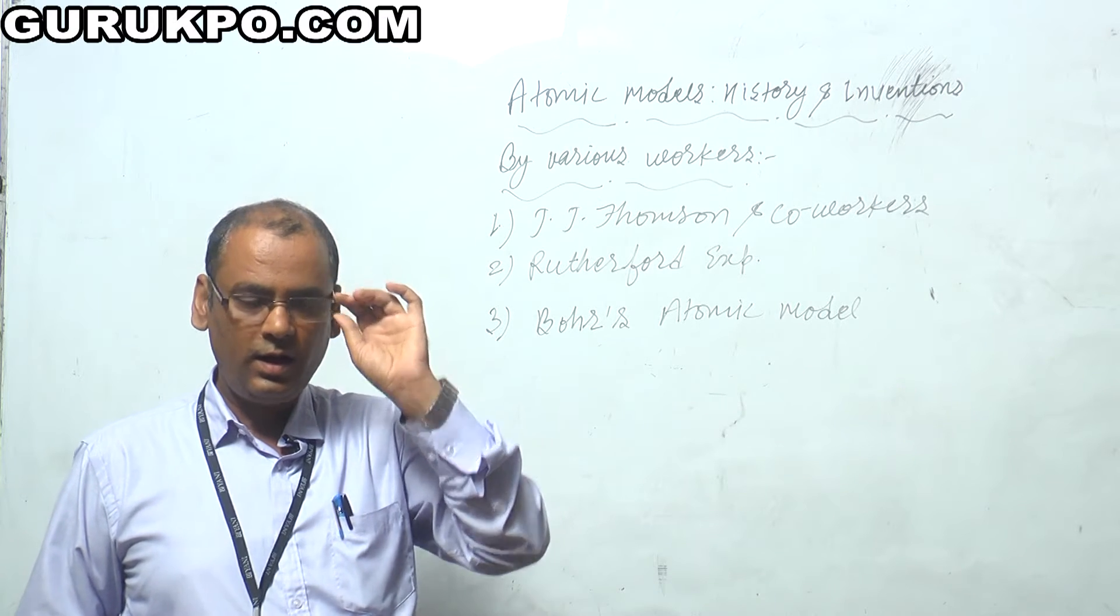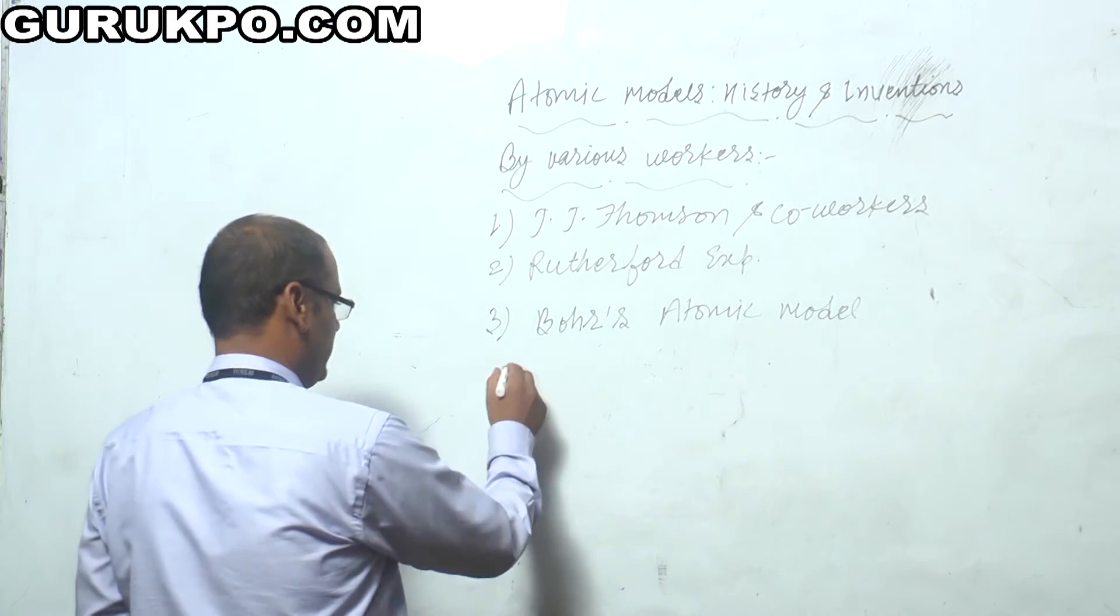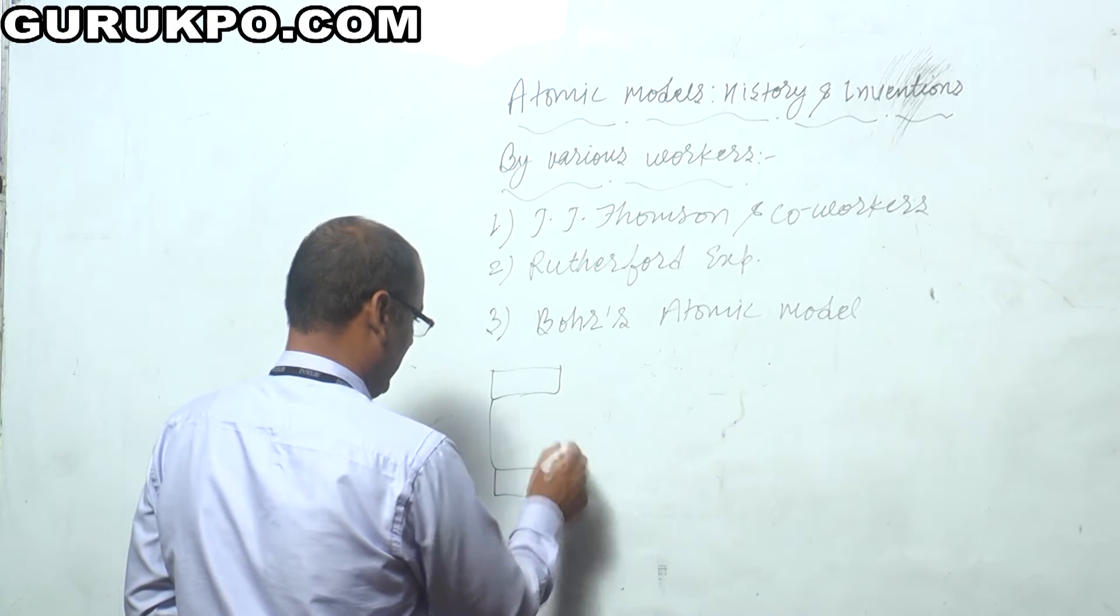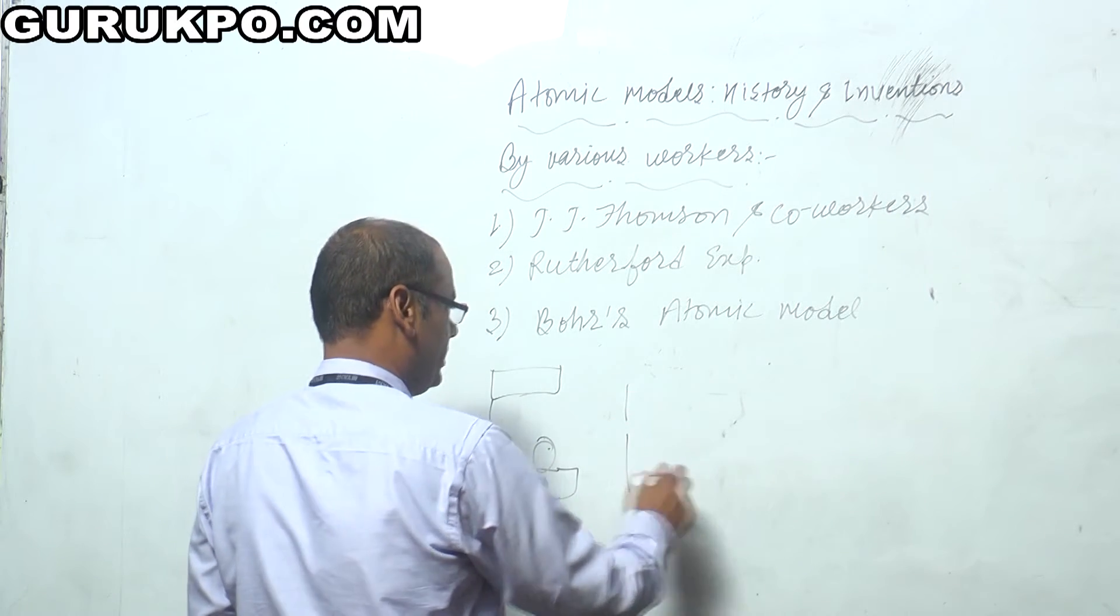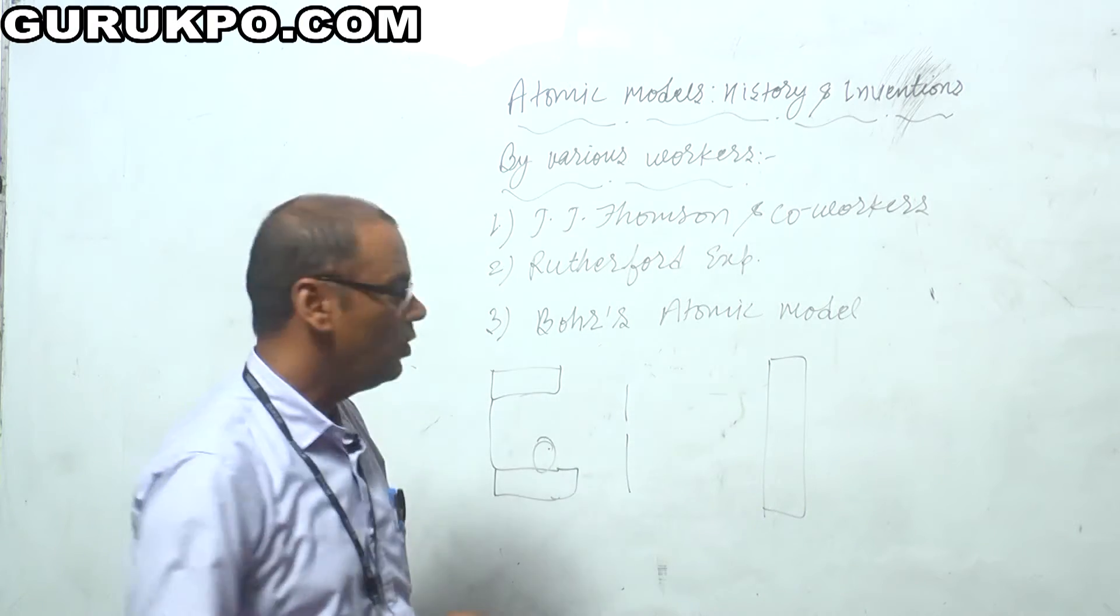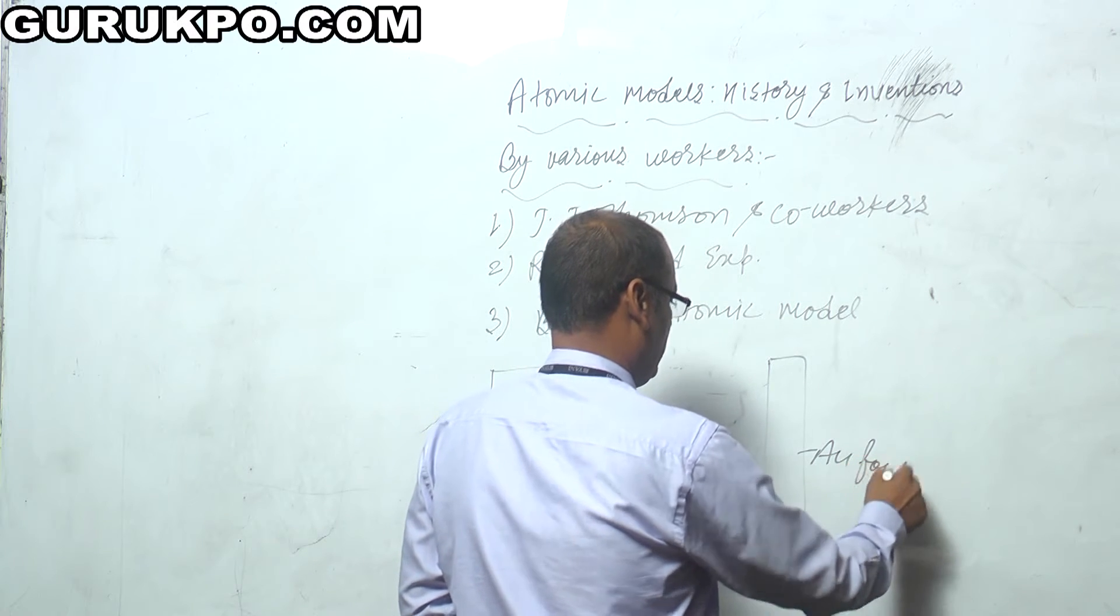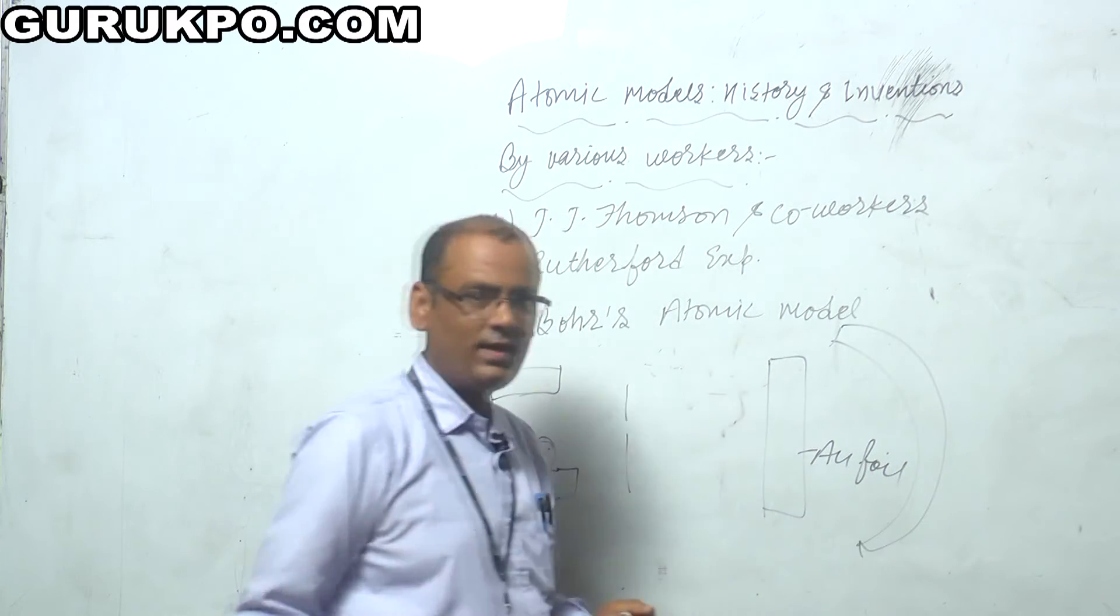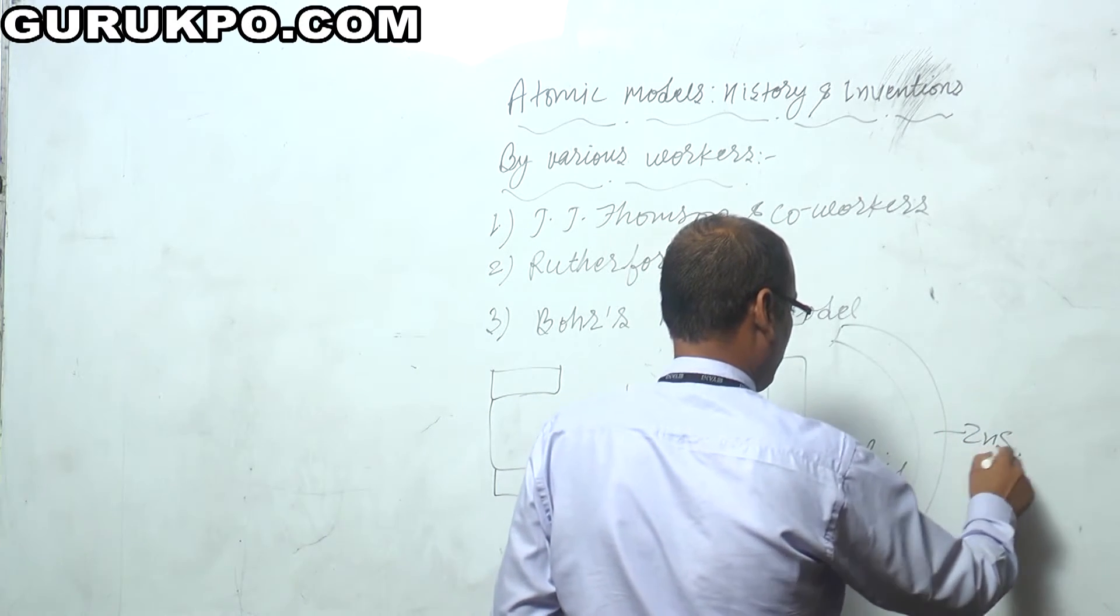On the gold foil, he depicted their work. He has taken the source of alpha particles and after passing from the slit, he passed these alpha particles on the gold foil, that is the gold foil, and he has taken one scintillation device which was a zinc sulfide plate.